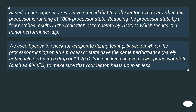Based on experience, a laptop overheats when the processor is running at 100% processor state. Reducing the processor state by a few notches results in a temperature reduction of 10 to 20°C, with only a minor performance dip. A processor running at 95% processor state gave nearly the same performance with a drop of 10 to 20°C. You can keep an even lower processor state, such as 80 to 85%, to make the laptop heat up even less.